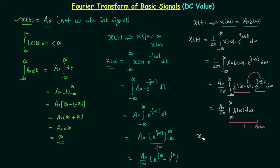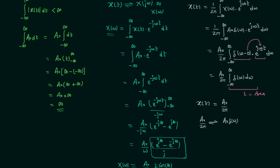So A0 over 2π is the time domain signal x(t), and it has the Fourier transform A0 delta(ω). Now we apply the linearity property: if we multiply something to the time domain signal, the same factor multiplies its Fourier transform. Multiplying 2π to the time domain signal gives 2π times A0 over 2π, which equals A0. Correspondingly, we multiply 2π to the Fourier transform, giving 2π A0 delta(ω).